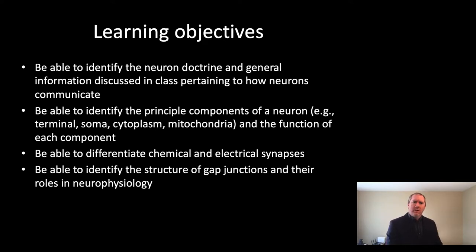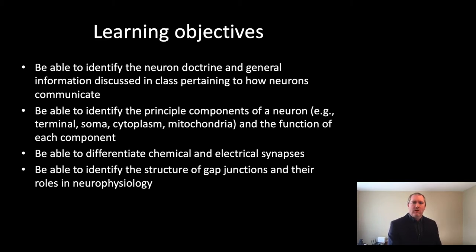The quiz material should primarily derive from the learning objectives — this is not a rule, but more of a guideline. The learning objectives for this first unit are to be able to identify the neuron doctrine and general information pertaining to how neurons communicate, identify principal components of a neuron, which should be review from 2020, and to differentiate electrical and chemical synapses and identify the structure of gap junctions and their roles in neurophysiology.